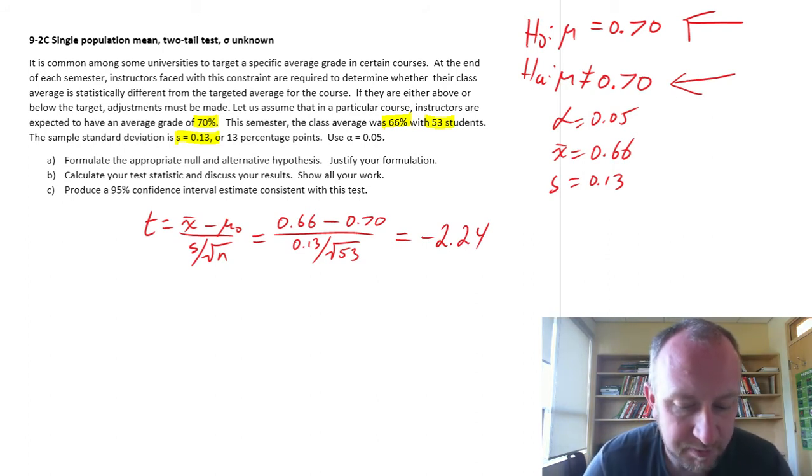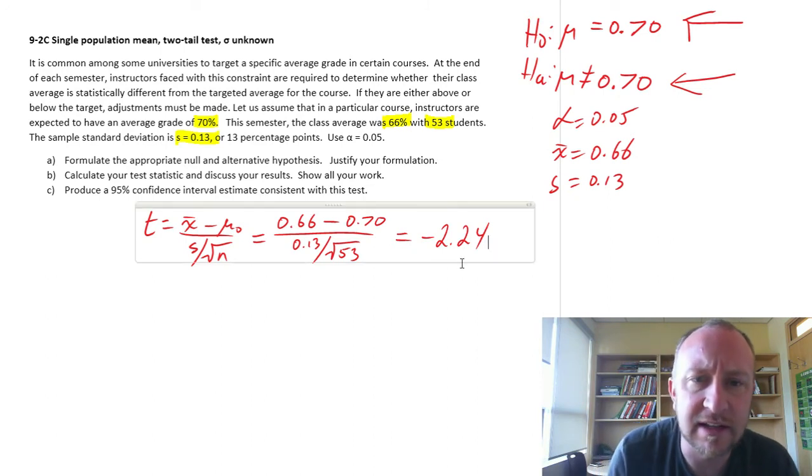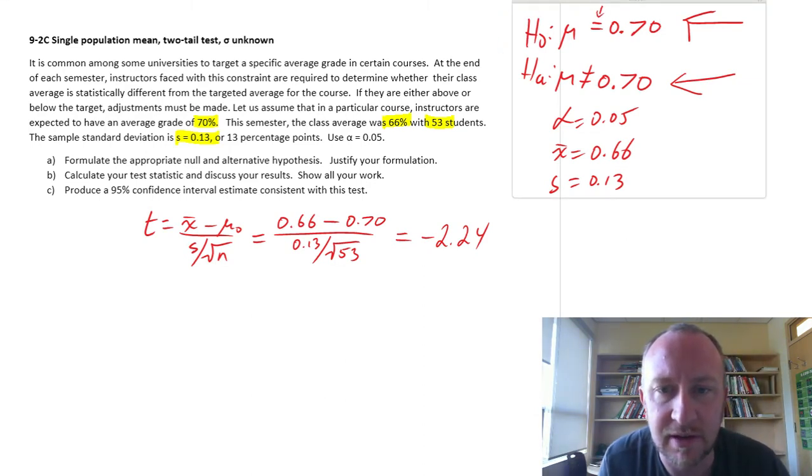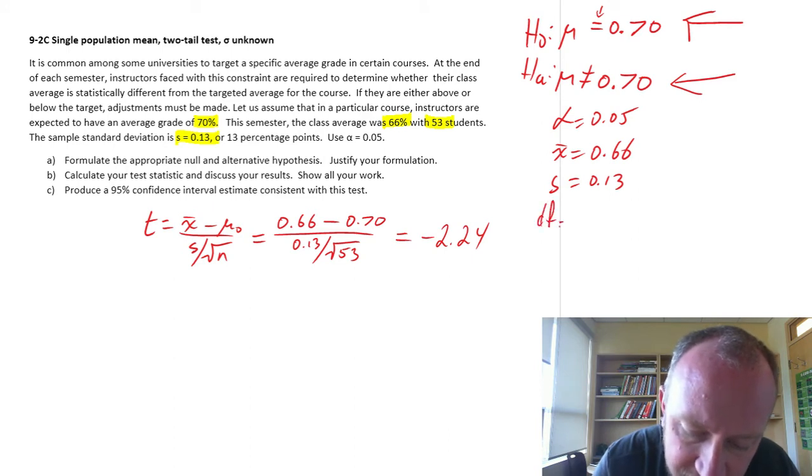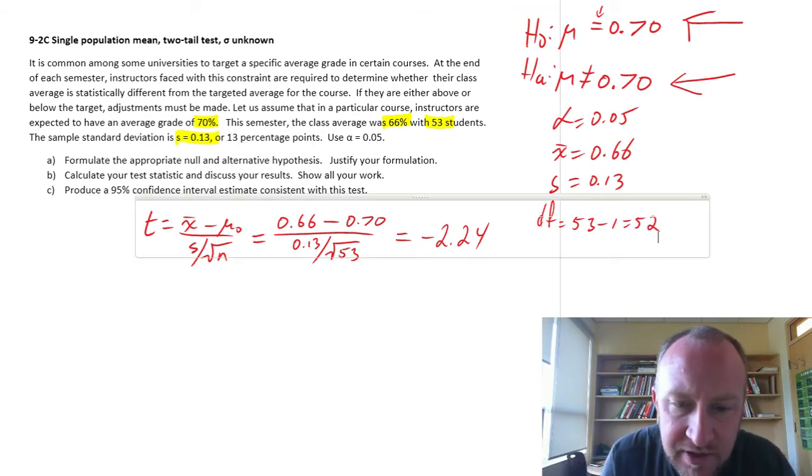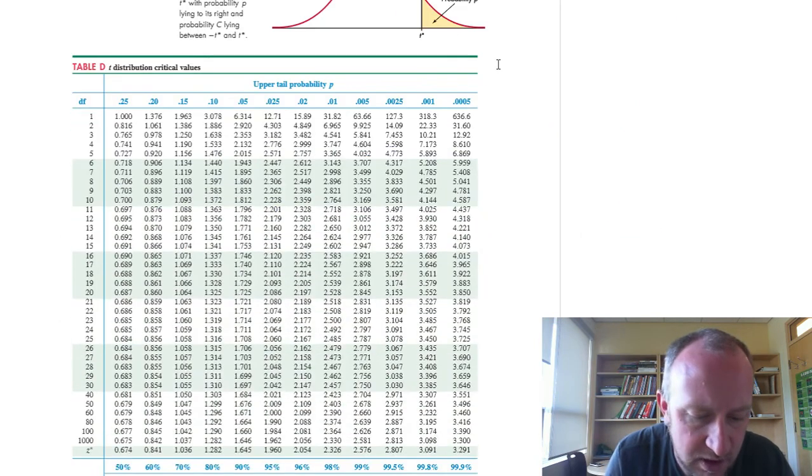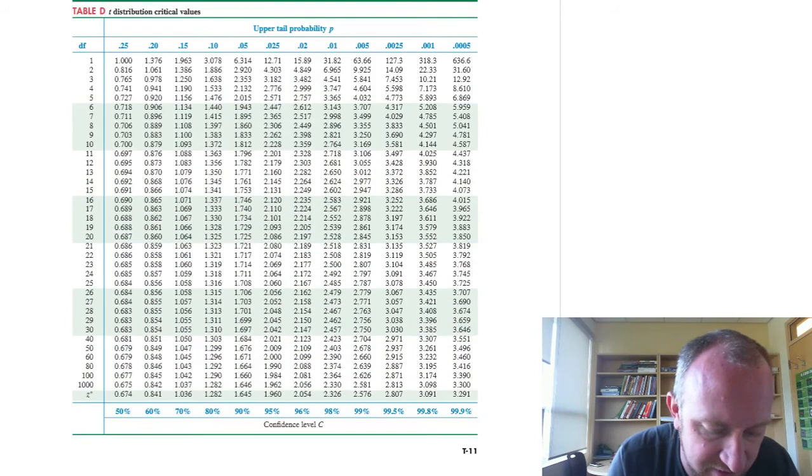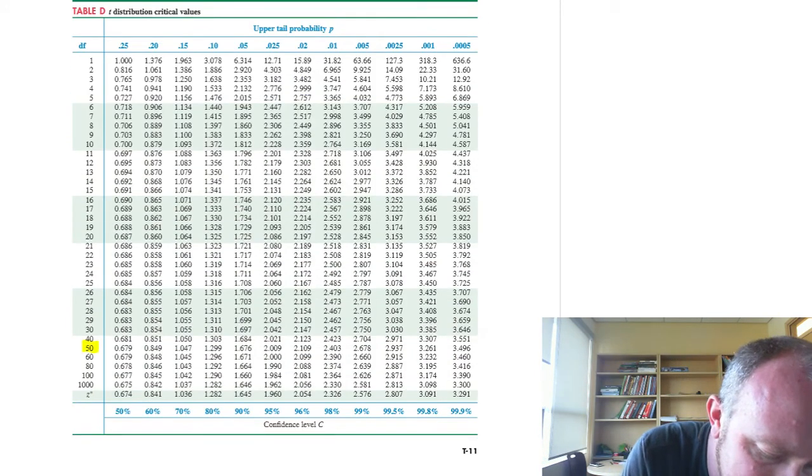Let's do both the p-value approach and the critical value approach for this one. Don't forget, this is a two-tailed test. So we have to make an adjustment to our probability to obtain the p-value. So we'll go to our t-tables. I have 53 observations. Degrees of freedom then, 53 minus 1 is 52. I suspect we're going to have to round it a little bit. So, what's the closest we have here? Probably we'll go to 50 degrees of freedom.